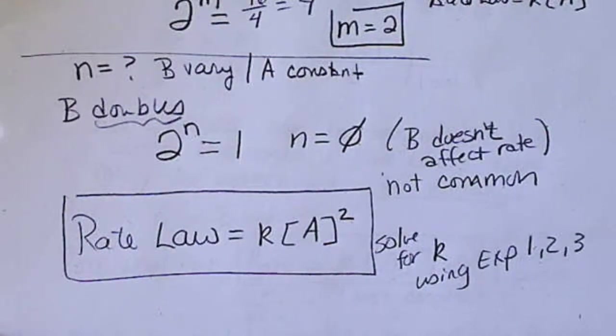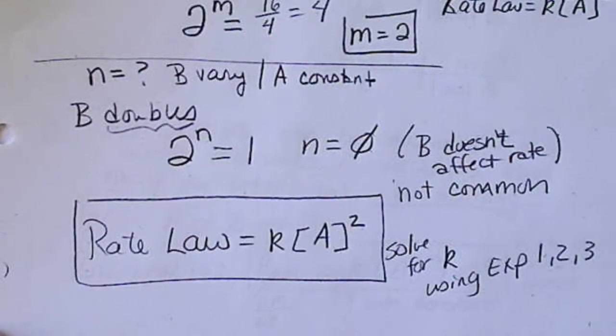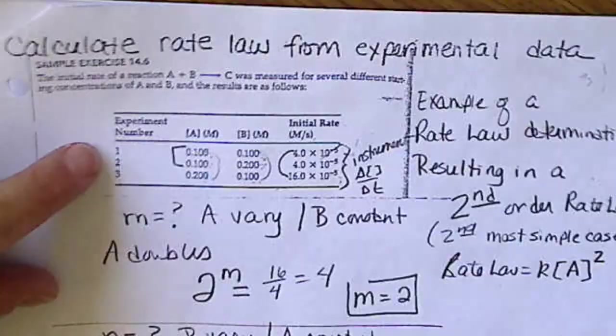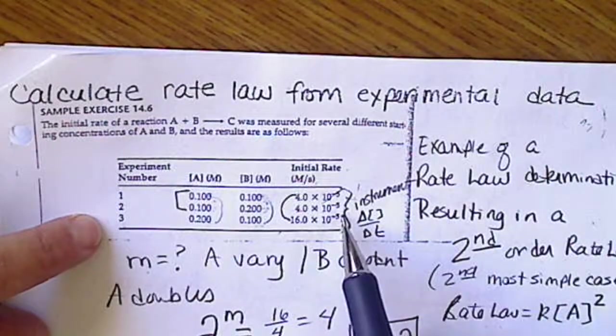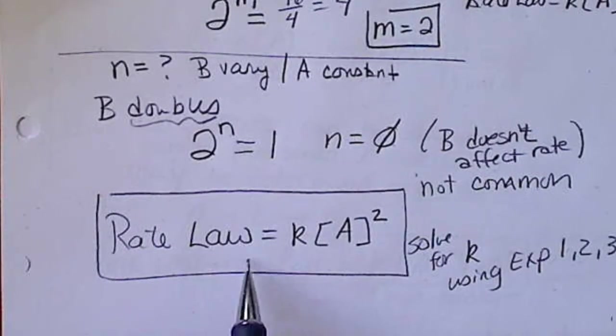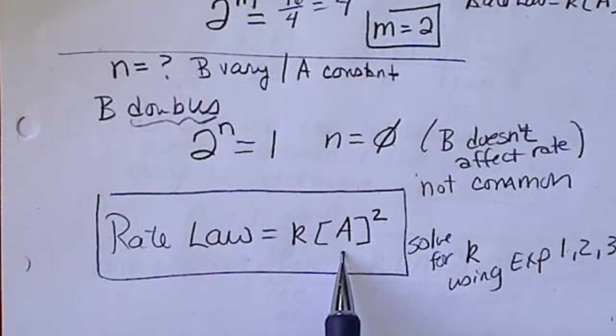using either experiment 1, 2 or 3. So, I'm not going to take the time to do that. What I'm trying to show us is the difference between any rate law that we calculate using multiple experiments. And then, if by chance,